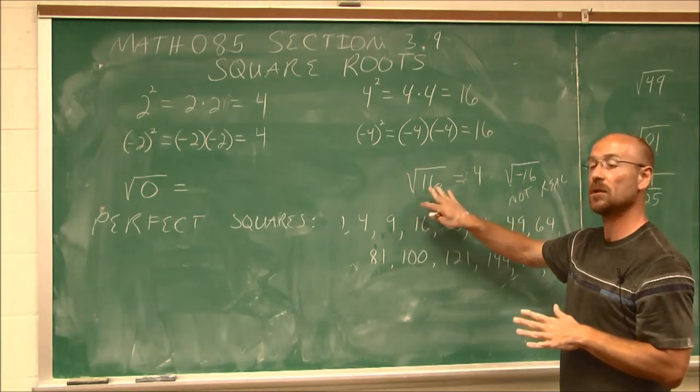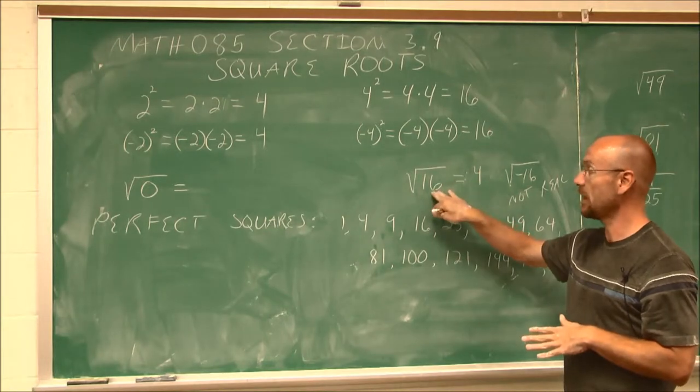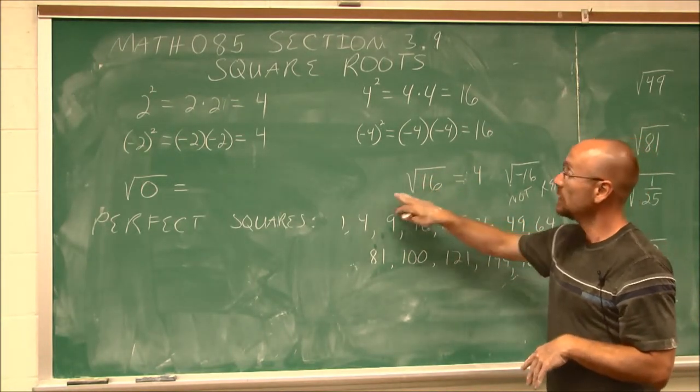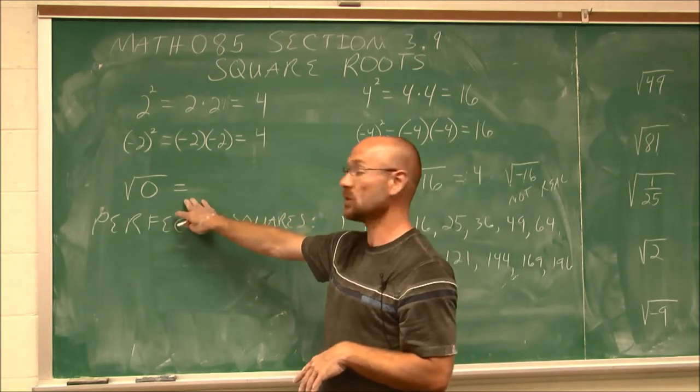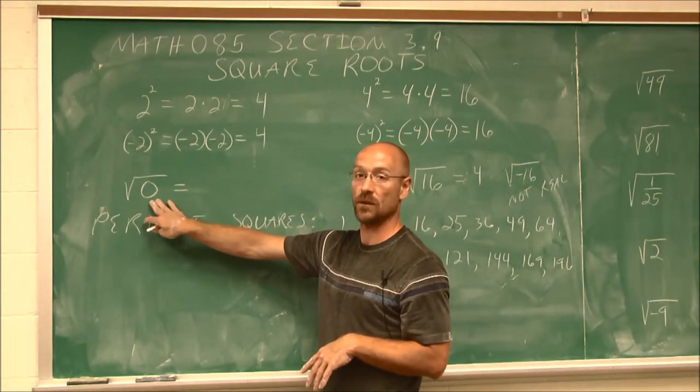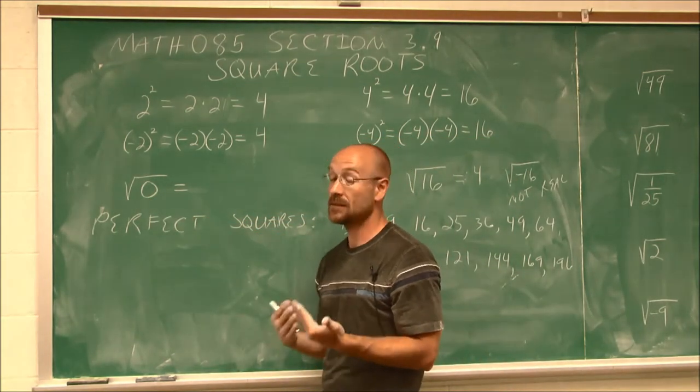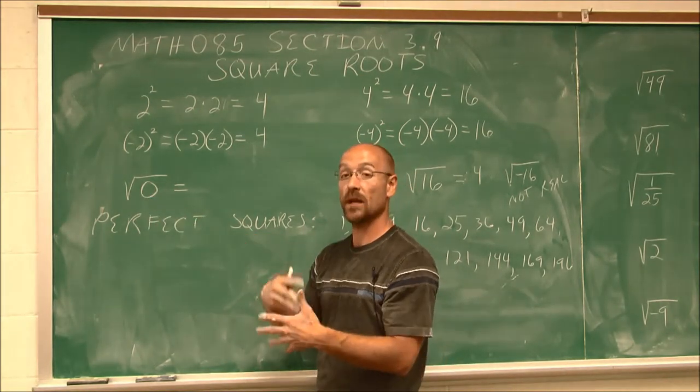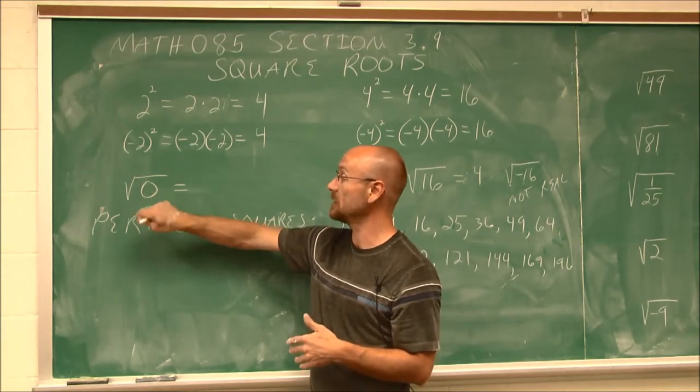So a square root says, what number times itself is the value under this radical, under the square root? So let's look at this one. Because this is a special case here. We have the square root of 0. Well, it still asks the same thing. What number times itself is 0? What number would I have to square in order to get this 0?